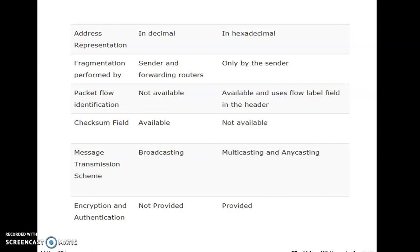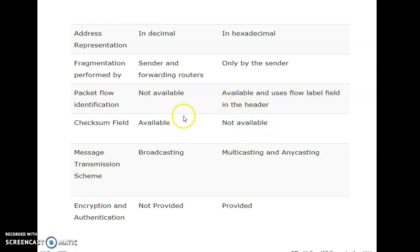In IPv6, fragmentation is done only at the sender side. For packet flow identification, it is not available in IPv4 but is available in IPv6 with the help of the flow label field. The checksum field is available in IPv4 but not available in IPv6. Regarding message transmission scheme, IPv4 supports broadcasting — one to all — while IPv6 supports multicasting and anycasting. Multicasting means one to many or a group, and anycasting means one to a specific group.